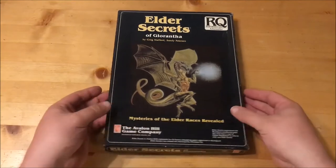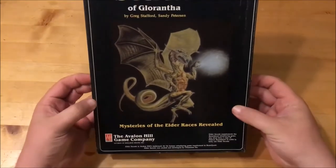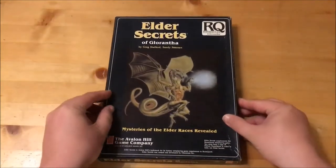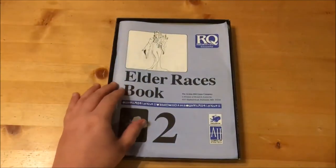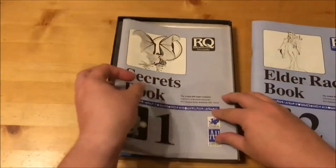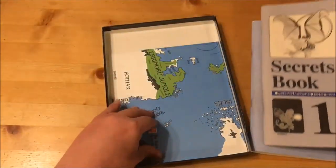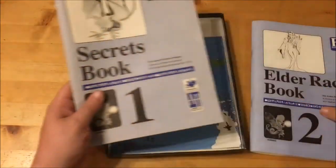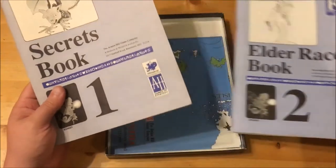Okay, to the box. The cover by Nick Smith appears to depict a spellcasting dragon and is actually not too bad. Inside the box we have three items: a map depicting the major human and Elder race regions, Book 1 entitled Secrets Book and Book 2 entitled Elder Races Book. Let's start with Book 1.